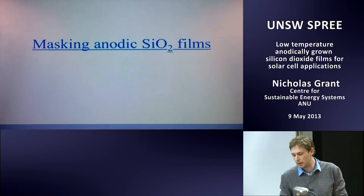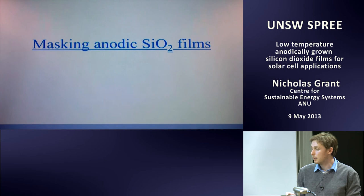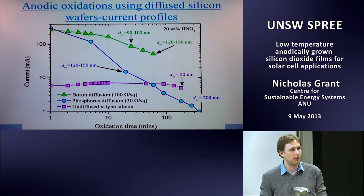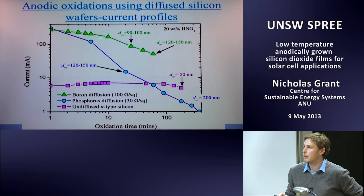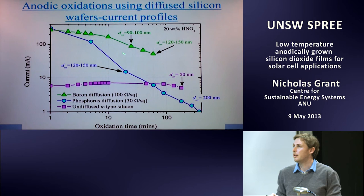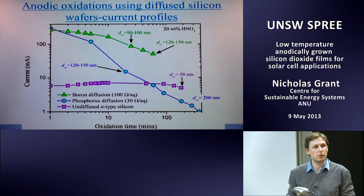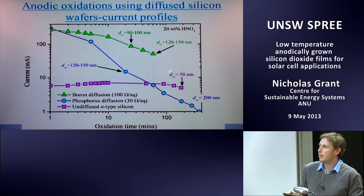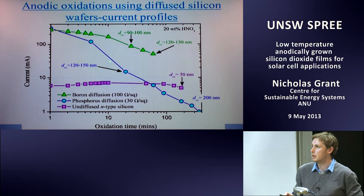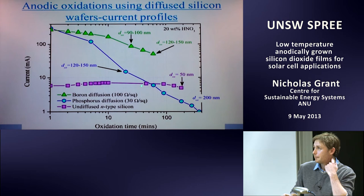Now for the last section — masking oxides, work from the last couple of weeks. When a boron or phosphorus diffusion is present and samples are immersed in nitric acid, the measured currents are much, much higher. For p-type this is understandable — there are many holes at the interface. For n-type it's strange — possibly a tunneling effect with electrons tunneling to the silicon, though it's still unclear. What's clear is the currents are significantly higher than for undiffused silicon wafers.